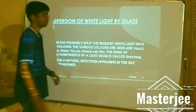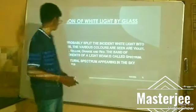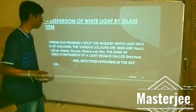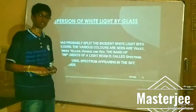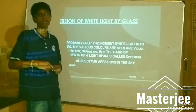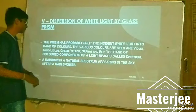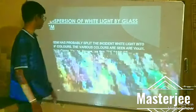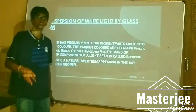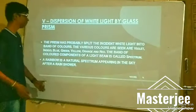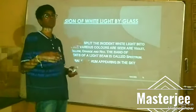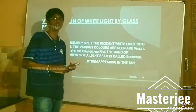The next topic is dispersion of white light by a glass prism. The prism splits white light into several different colors — the spectrum known by the acronym VIBGYOR: violet, indigo, blue, green, yellow, orange, red. This band of colored components of light is called a spectrum. When this spectrum appears in rain, plenty of water droplets each produce a small spectrum.